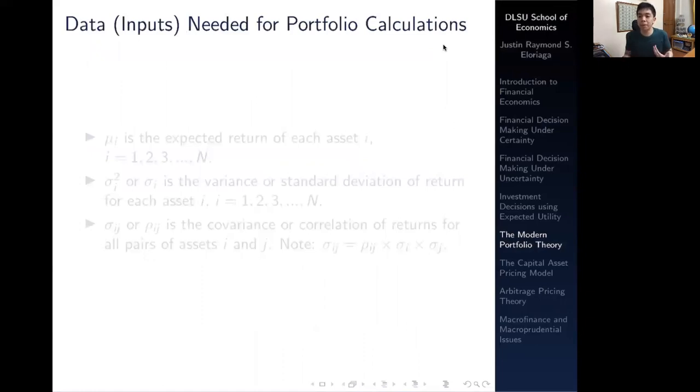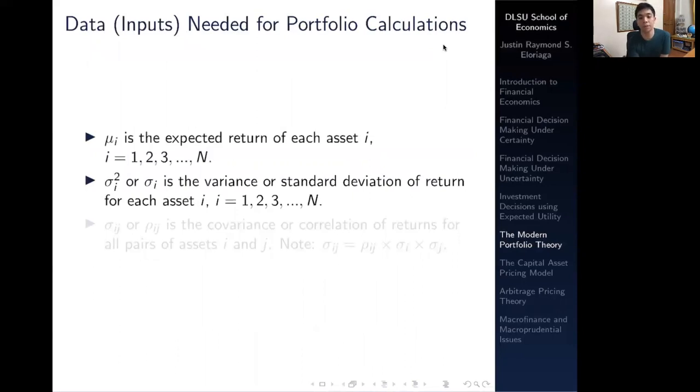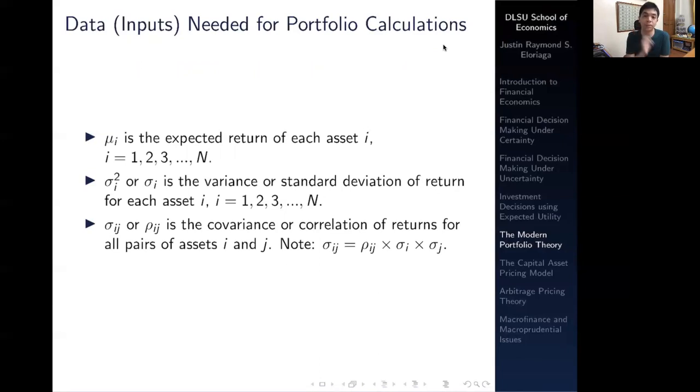What are the data points that you need for the portfolio calculations? You need the expected return of each asset, the variance or standard deviation of return for each asset, and the covariance or the correlation of returns for all pairs of assets.